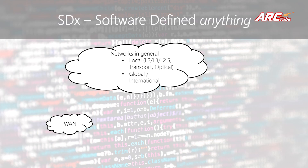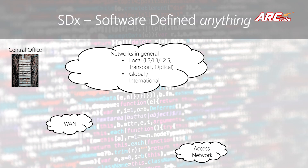We also have something called wide area network, even though it is not closely associated with the type of networks that telcos would have. Wide area network is usually associated with enterprises where the head office is connected to branches over wide area network. We have access network technologies like fiber to home, ADSL, different wireless technologies, etc. We also have central offices — in some contexts referred to as local exchanges — where we have our infrastructure associated with access networks.